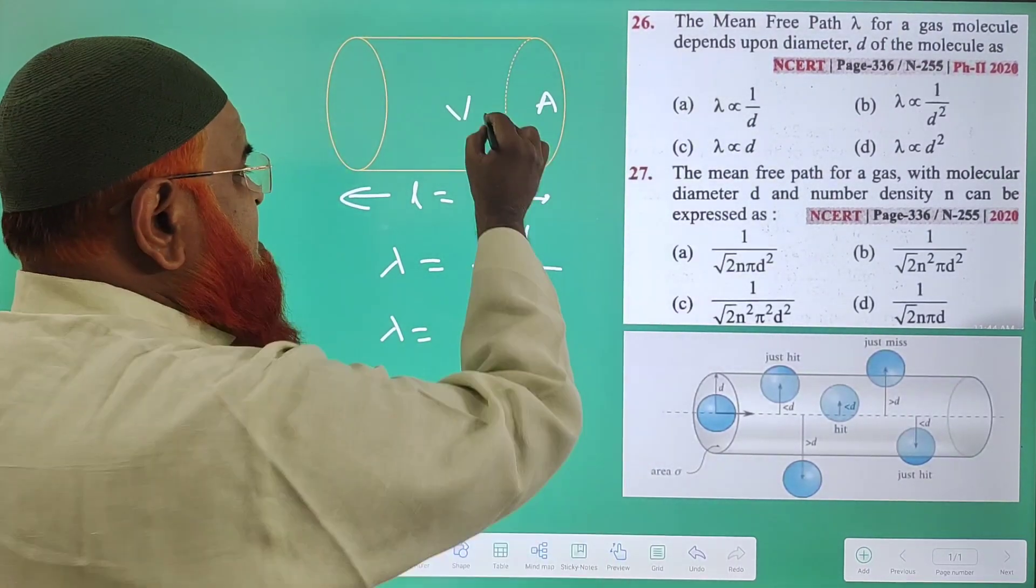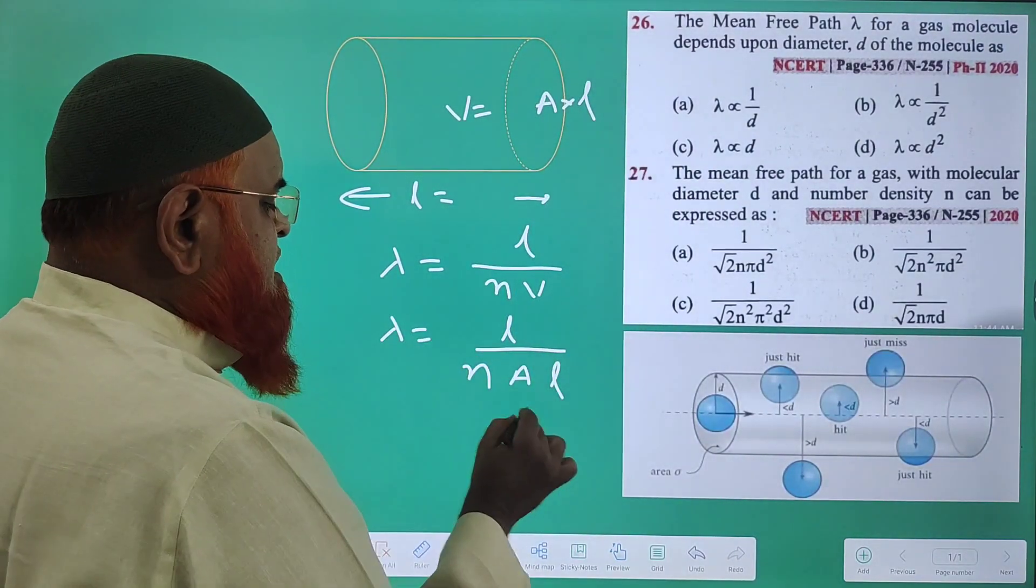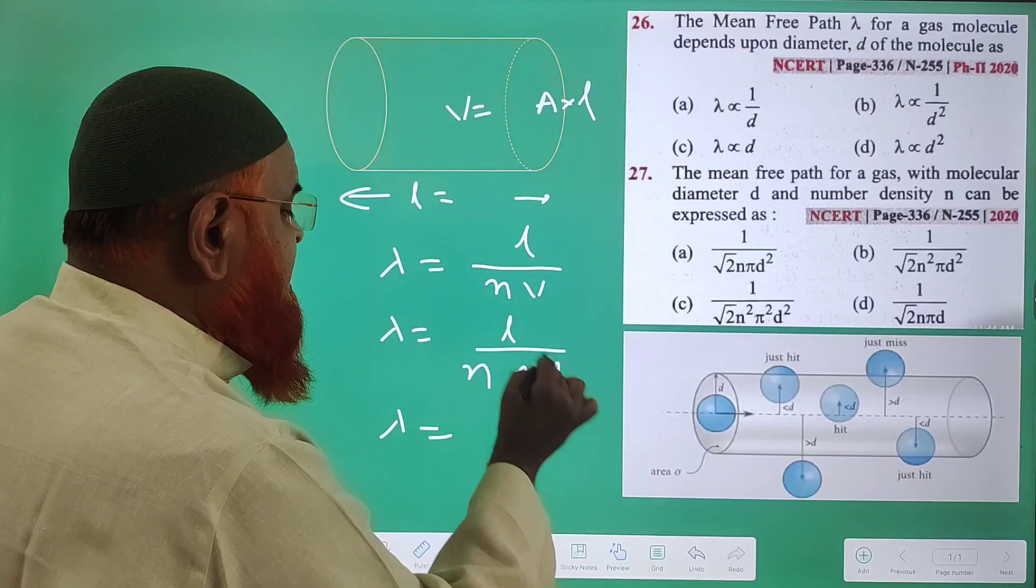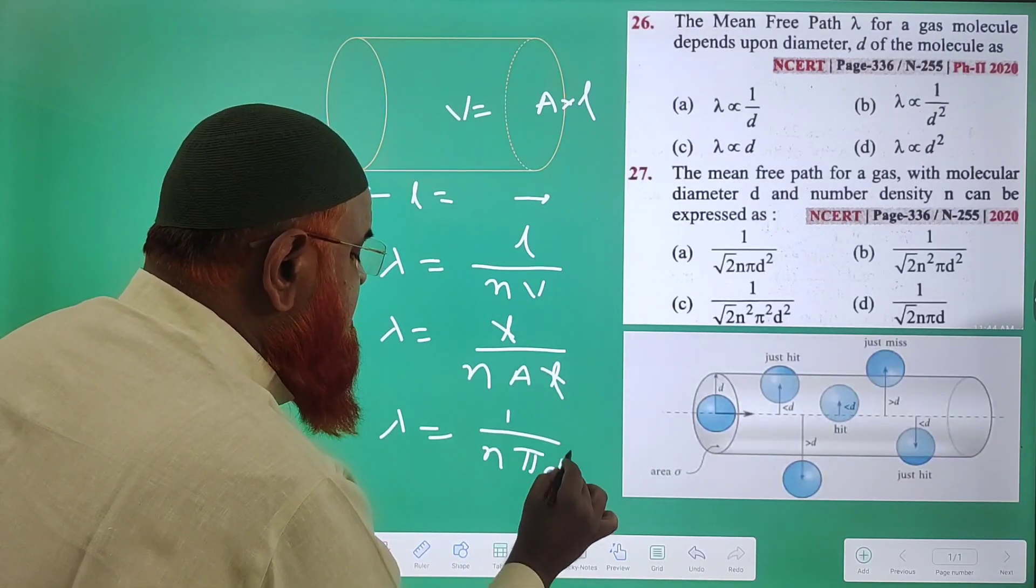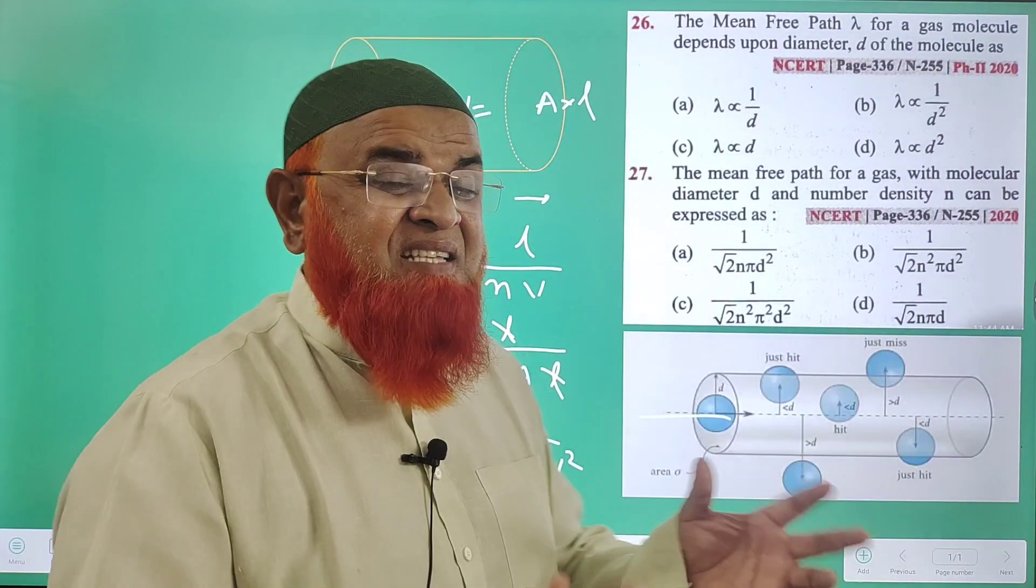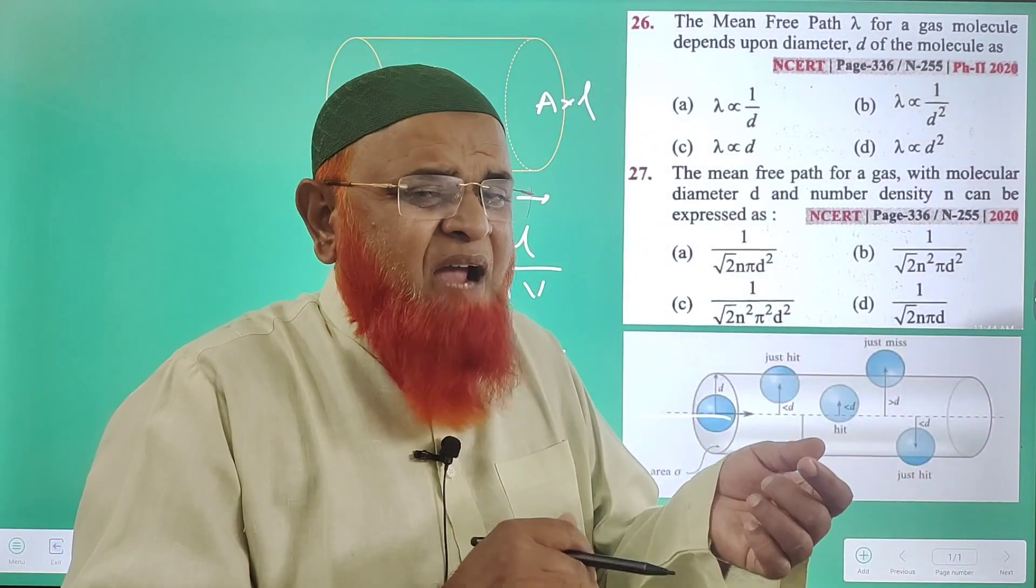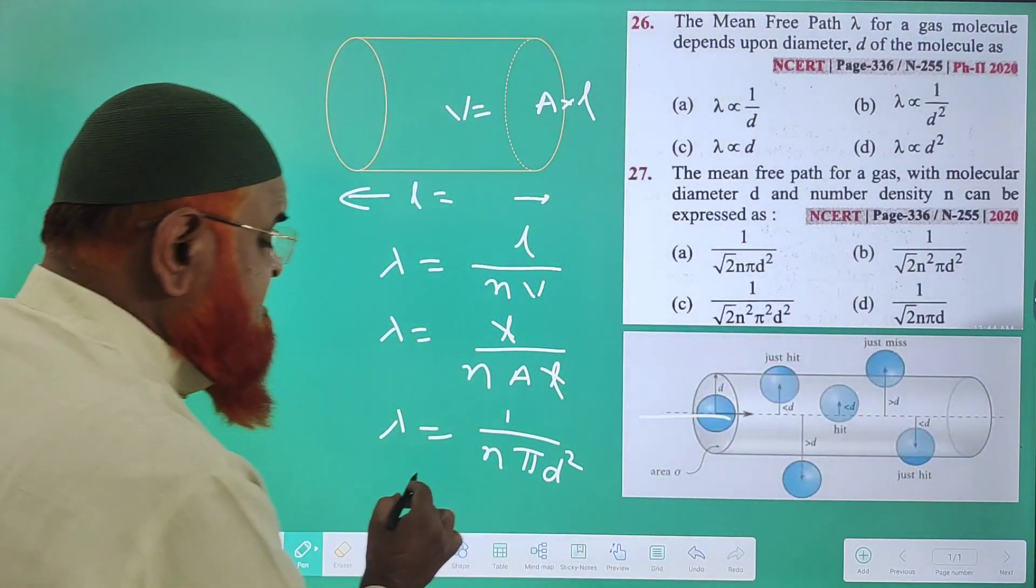Therefore, lambda is going to be L divided by n times A times L. L gets cancelled here, giving us 1 by n pi D squared, because here the radius of the cylinder is taken as D. D is not the diameter here; D is taken as the radius of the cylinder. So your answer is ready, your formula is ready.